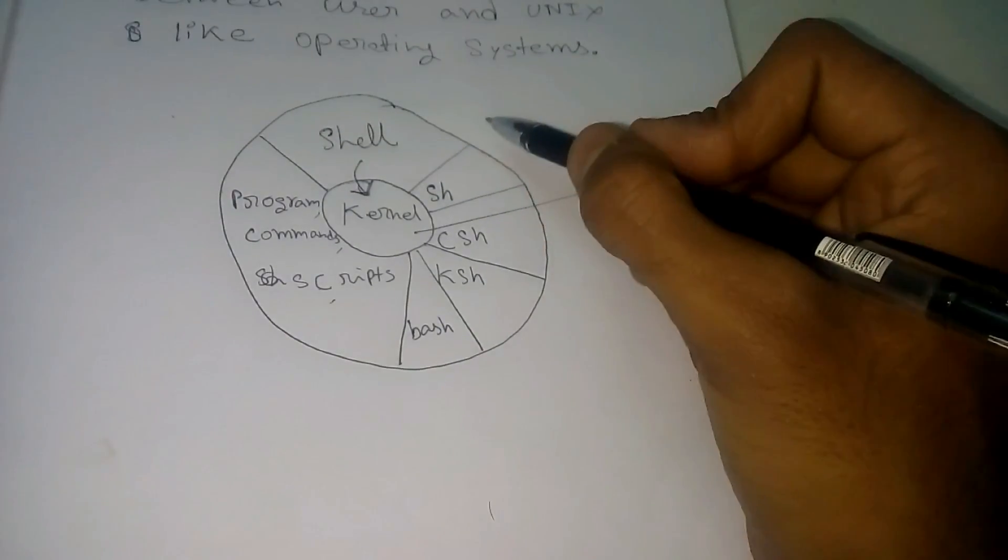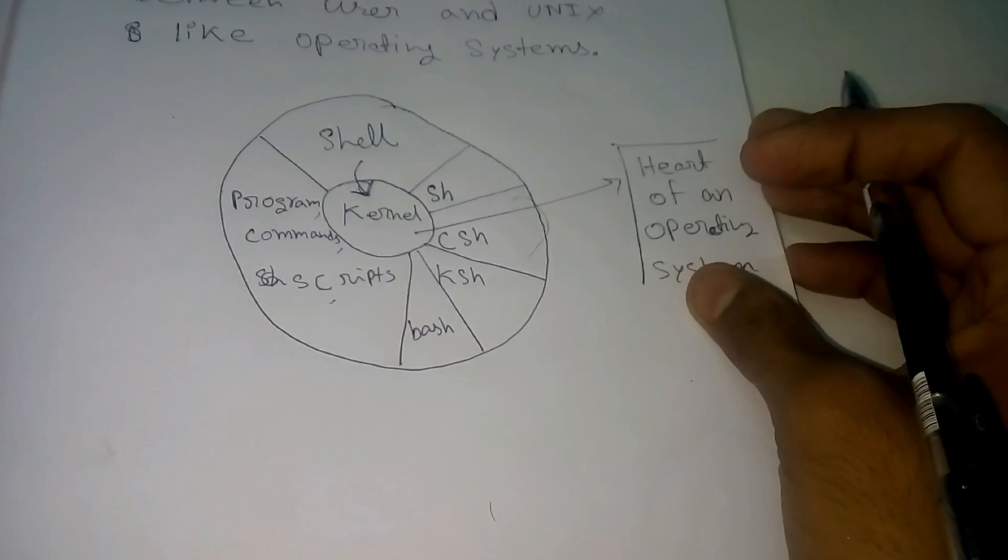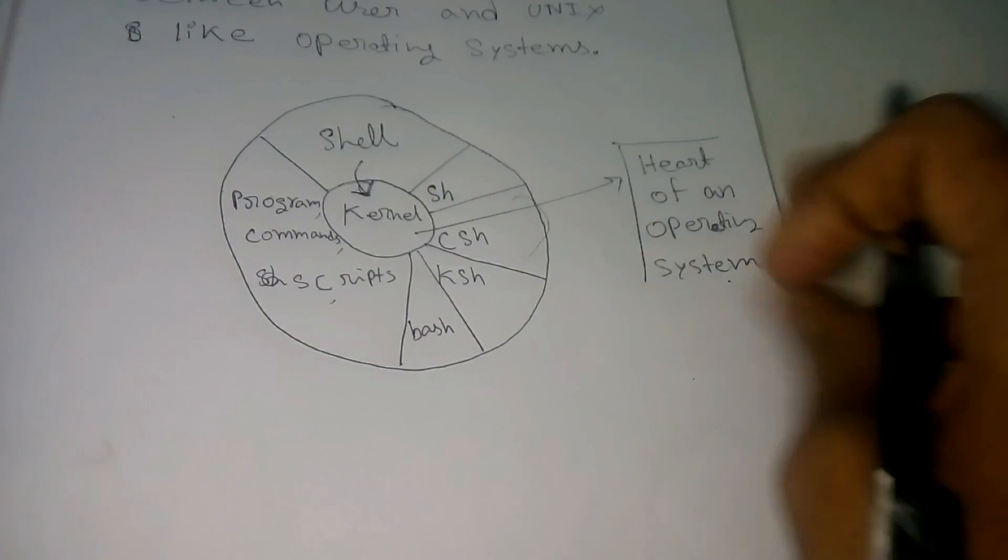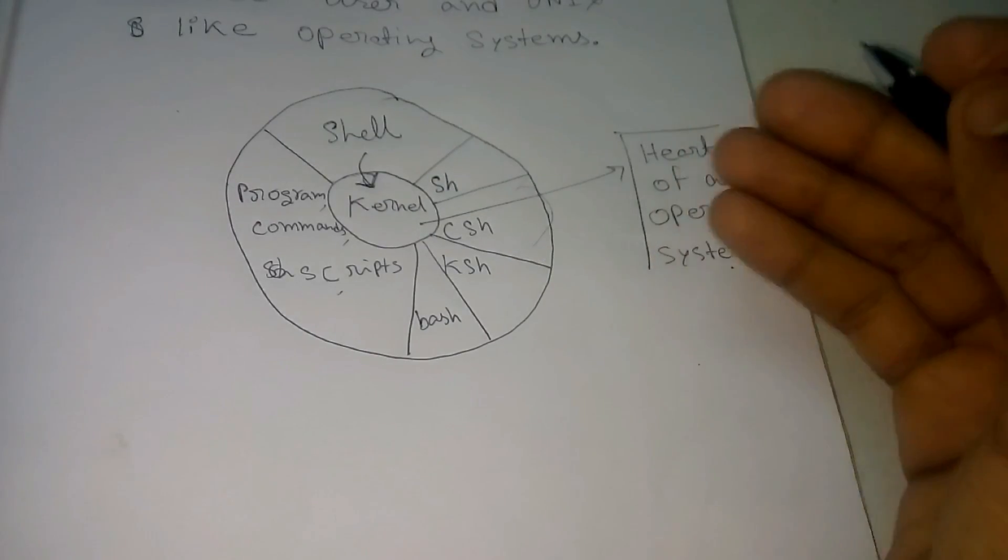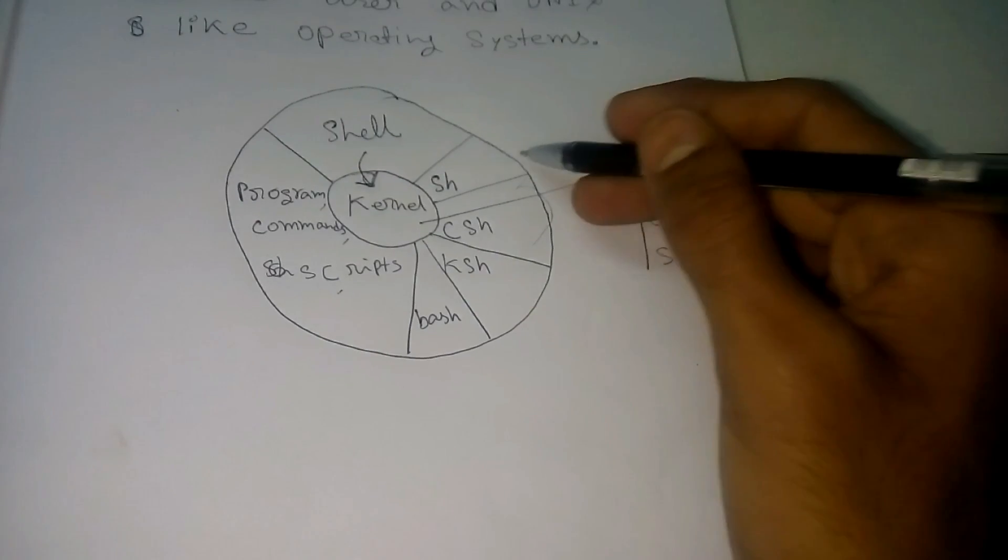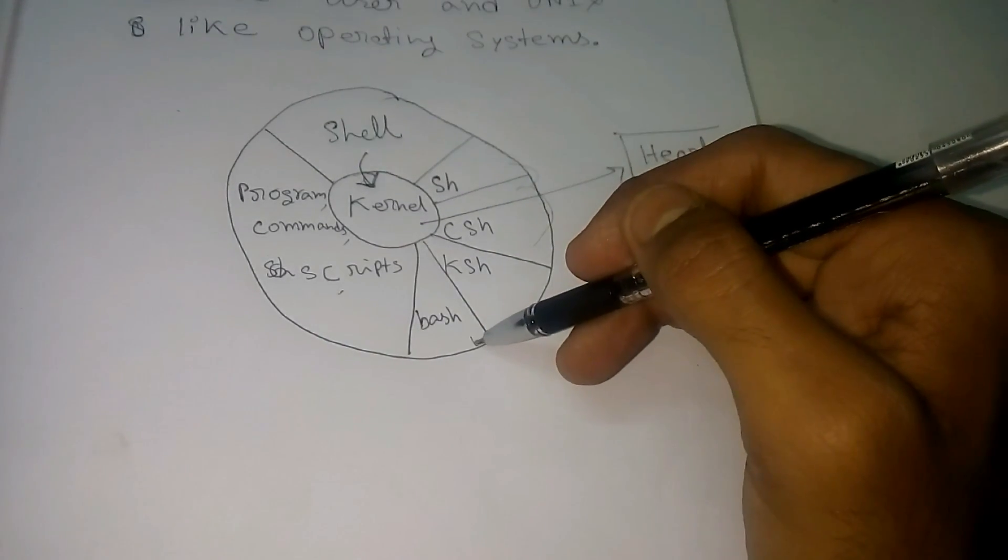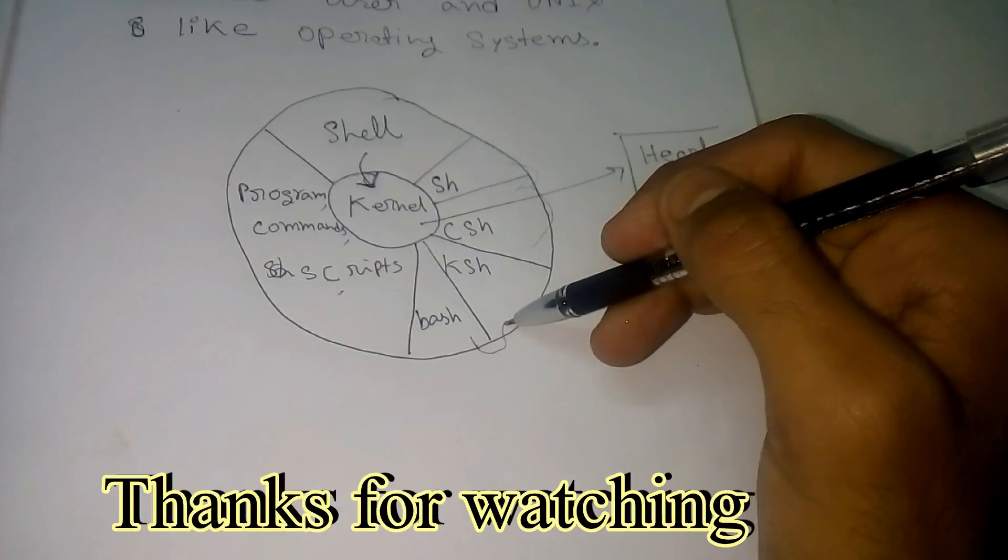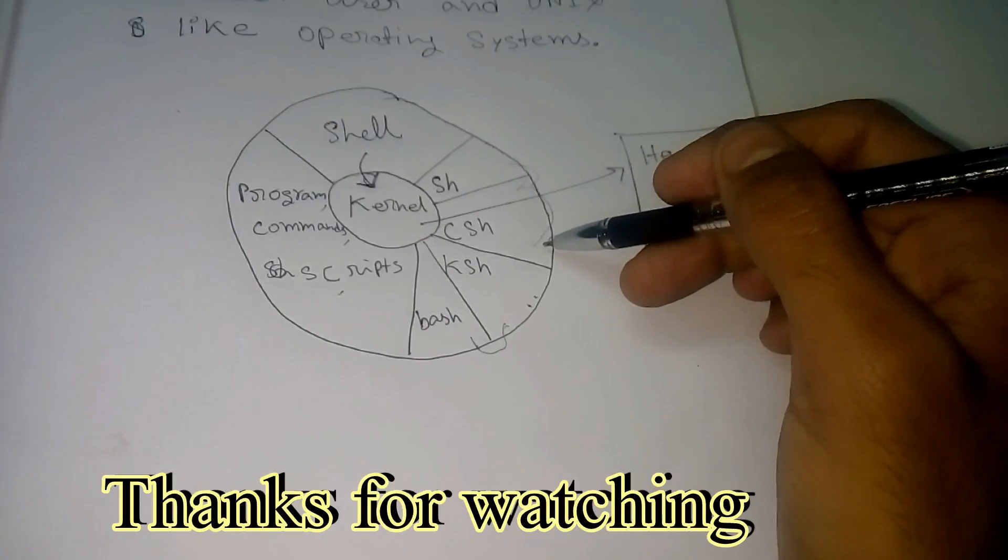We can also switch between shells. When we use the terminal, by writing some commands, we can switch between shells. We can change from BASH shell to CORN shell and from CORN shell to CSH.